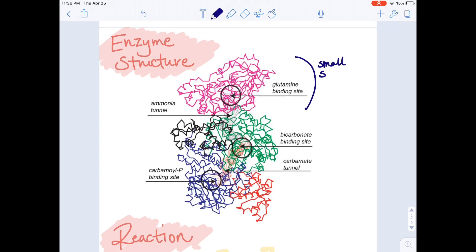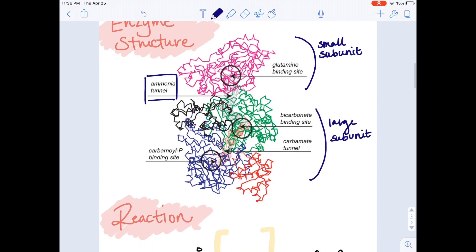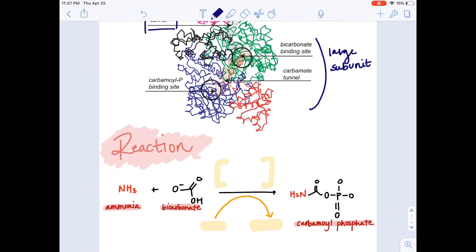CPS1 is a heterodimer with a small subunit and a larger subunit, although in mammals and other vertebrates, the CPS1 protein is encoded by a single gene. The small subunit contains one active site for the binding and deamination of glutamine to make ammonia and glutamate. The large subunit contains two active sites, one for the production of carboxyphosphate, and the other for the production of carbamoyl phosphate.